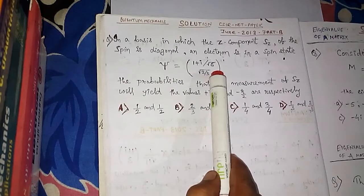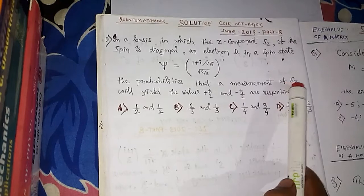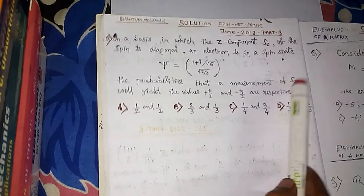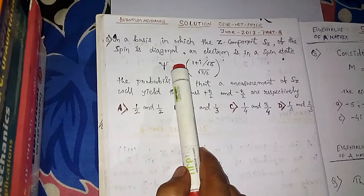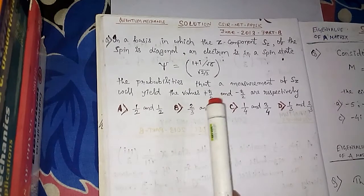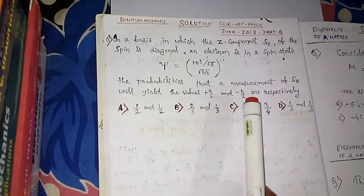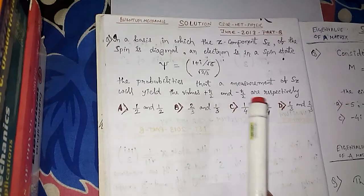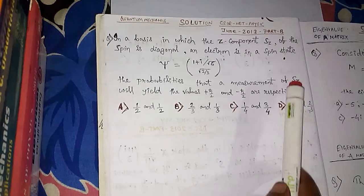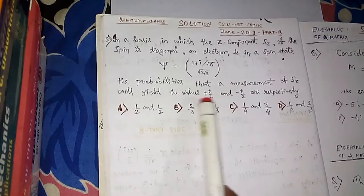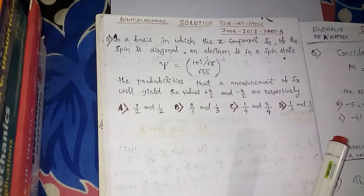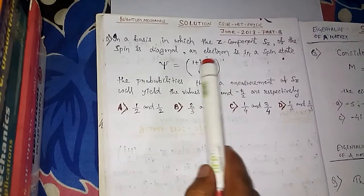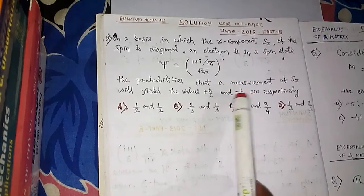A spin state has been given and a measurement of Sz — that means the Z component of spin — is being measured on this spin state. We know there will be two possible results: either +ℏ/2 or -ℏ/2. The question asks what is the probability that this measurement will give us +ℏ/2, and what is the probability that it will give us -ℏ/2.